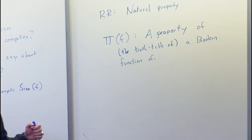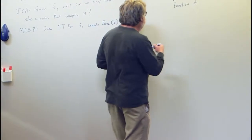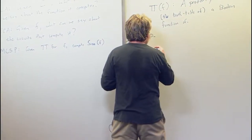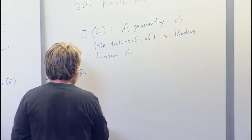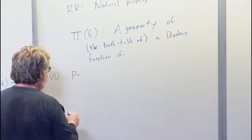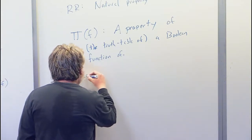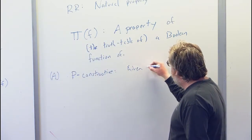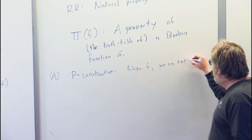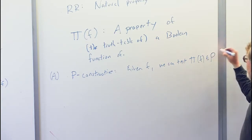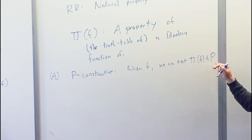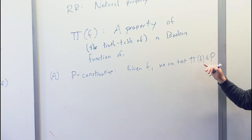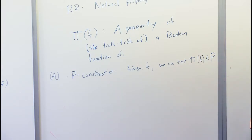I'm going to pick one setting of the knobs. The first condition is polynomial-time constructivity: given F, we can tell in polynomial time whether F has the property. One important note here is that polynomial time, since the input is the whole truth table for F, is really exponential time in the input size to the function F. So if F is a Boolean circuit on N input bits, polynomial time means time 2 to the order N.